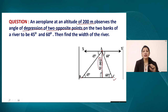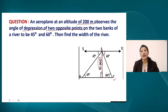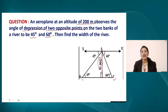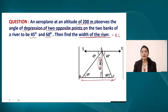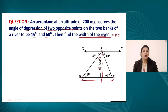In this question we are talking about the angle of depression. In our previous session we solved some questions using the angle of elevation. Here the two points B and C are on the two banks of a river. We need to calculate the length BC by finding BP and PC separately, then adding both values for the final answer.